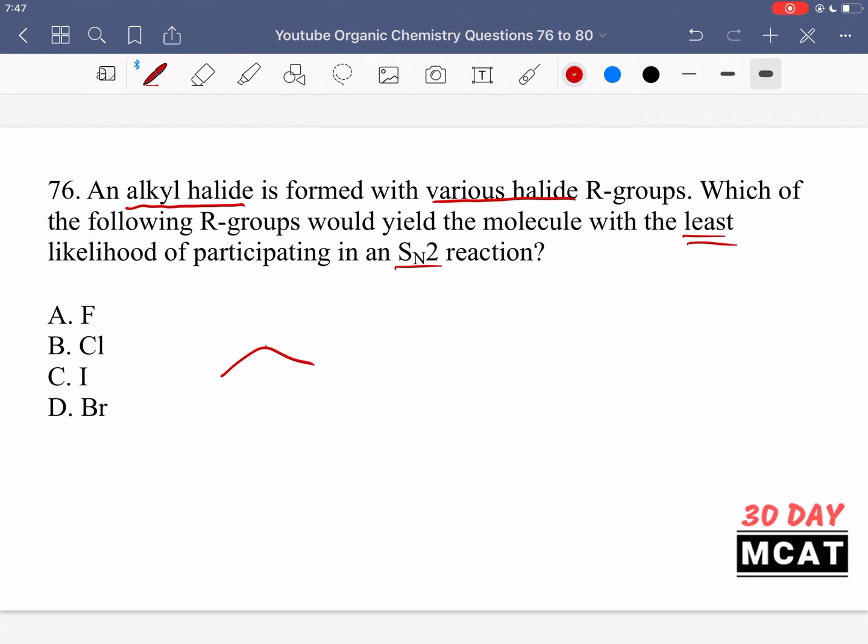So an alkyl halide can look like this, and then we have some X, which is our halide, that's our leaving group. And then we can have a nucleophile come in and displace that leaving group, which would be our halide. So that's what an alkyl halide looks like - a carbon chain with some halogen attached to it. In the answer options we have different halogens.